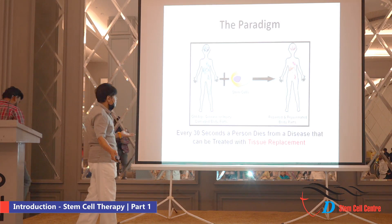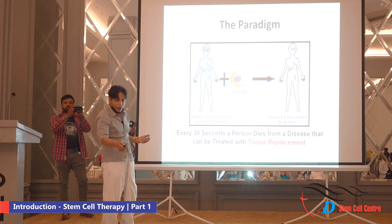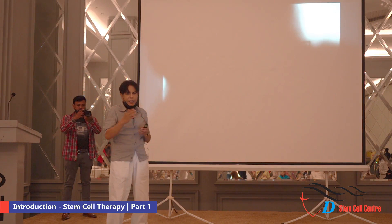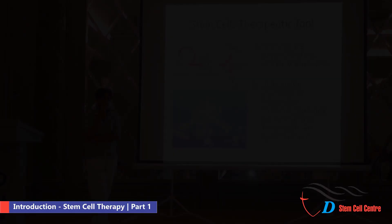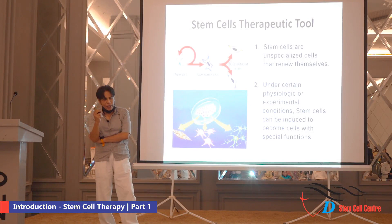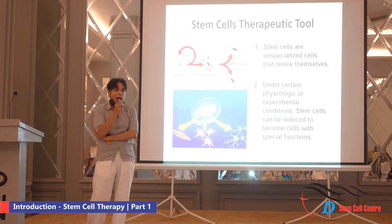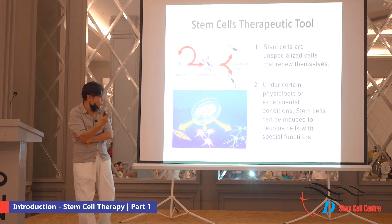Stem cells have two very remarkable properties. They have a very high potential to make more copies of themselves. That takes care of the first dilemma — we need to increase the number of cells in our compromised tissue due to disease or injury. Cells have been lost from a particular tissue or organ and now we have to restore the function. We have to not only increase the number of cells that have been lost, but those cells also have to perform the specialized functions of the cells that were lost.